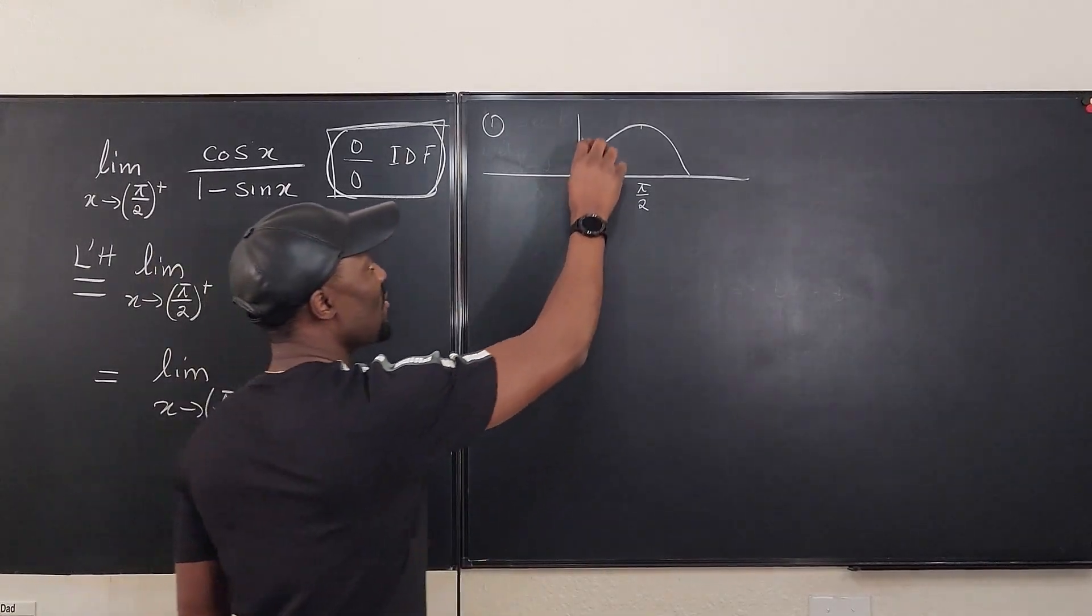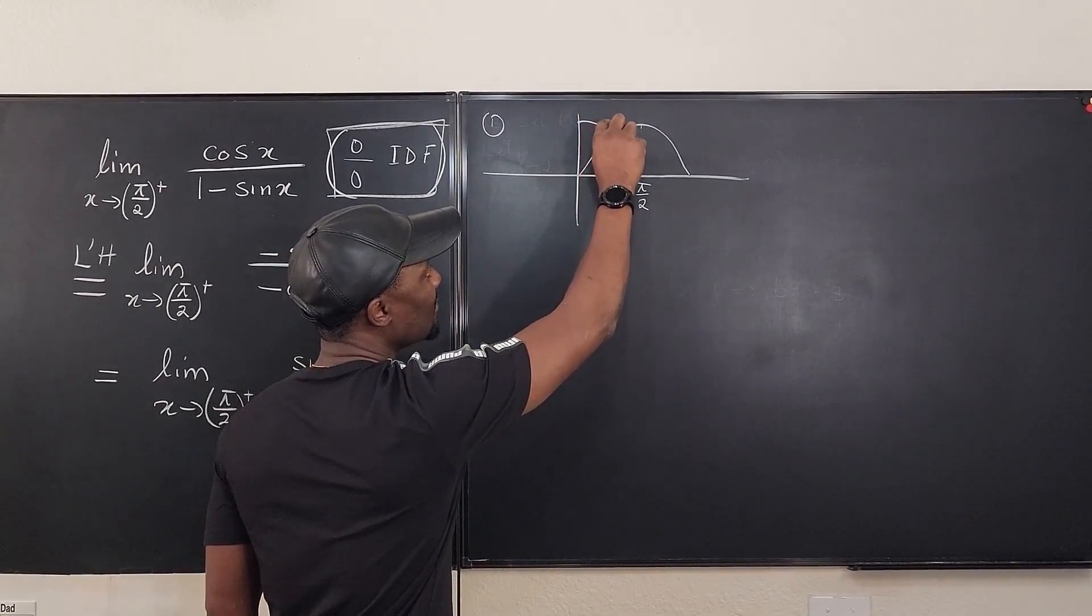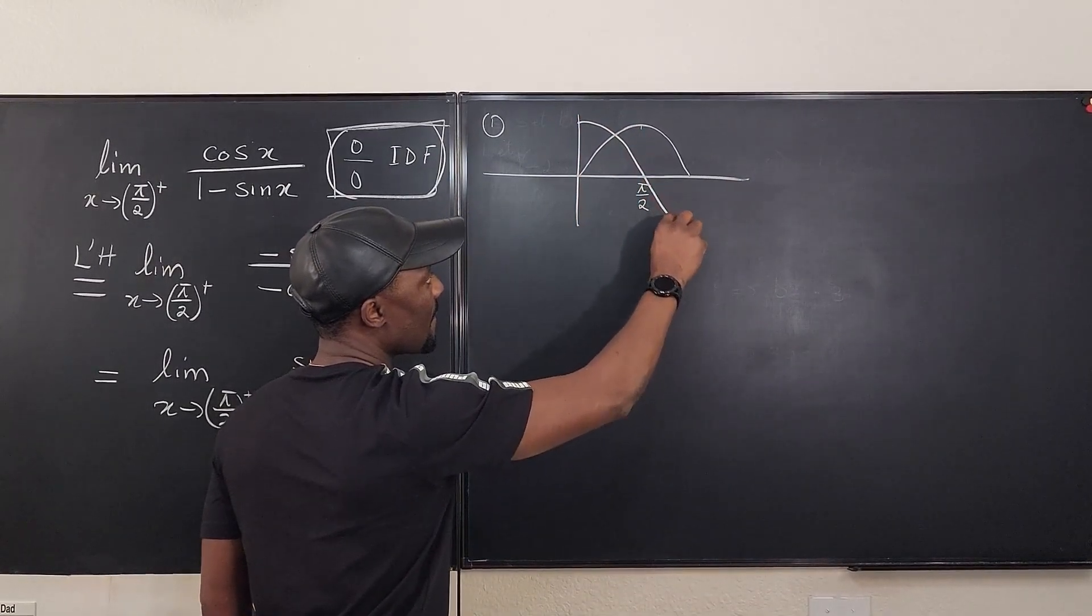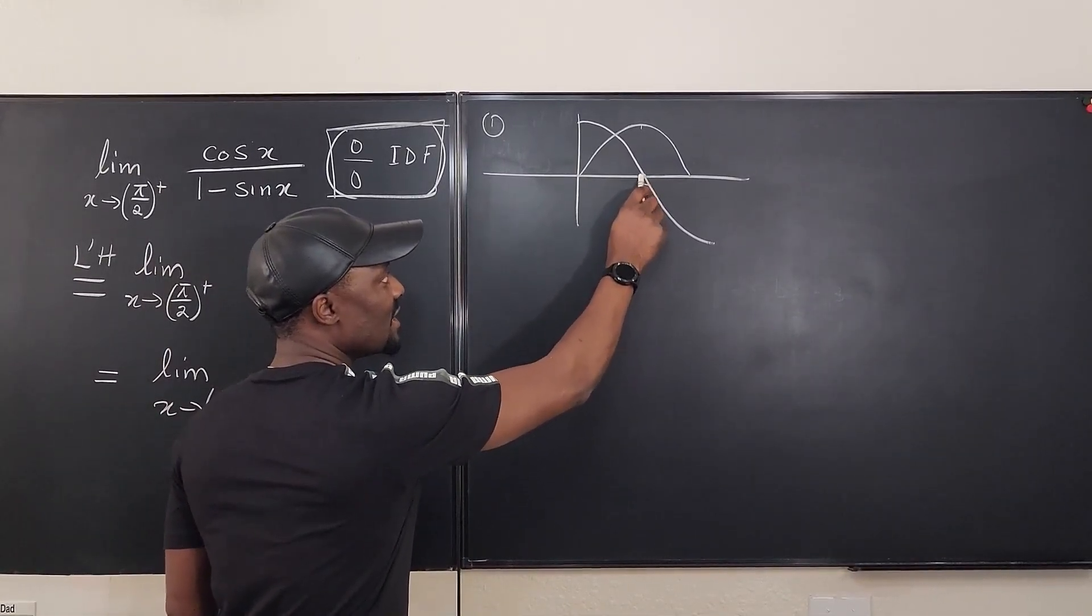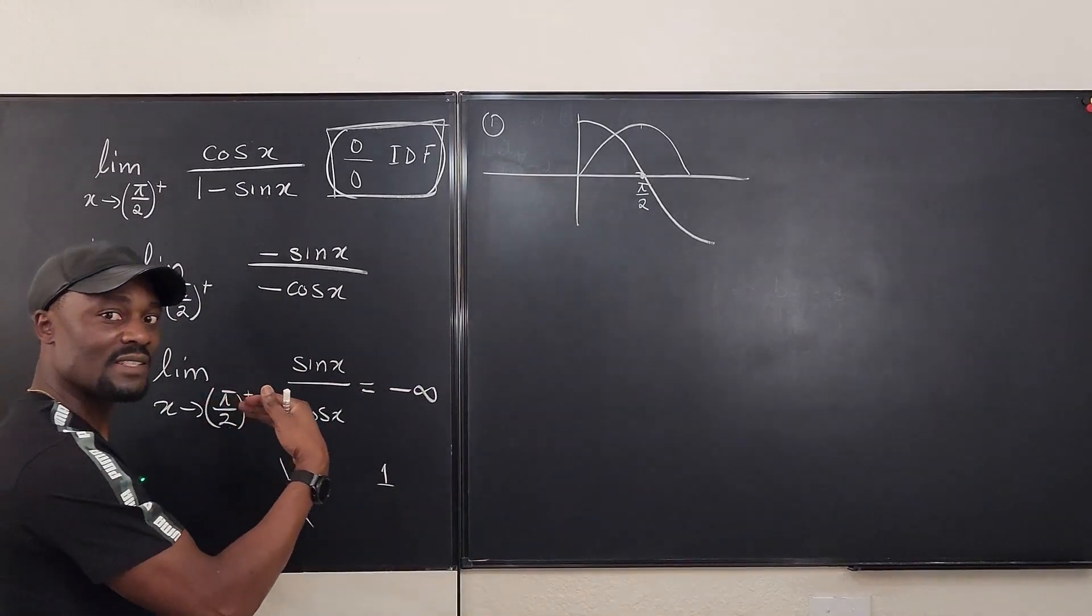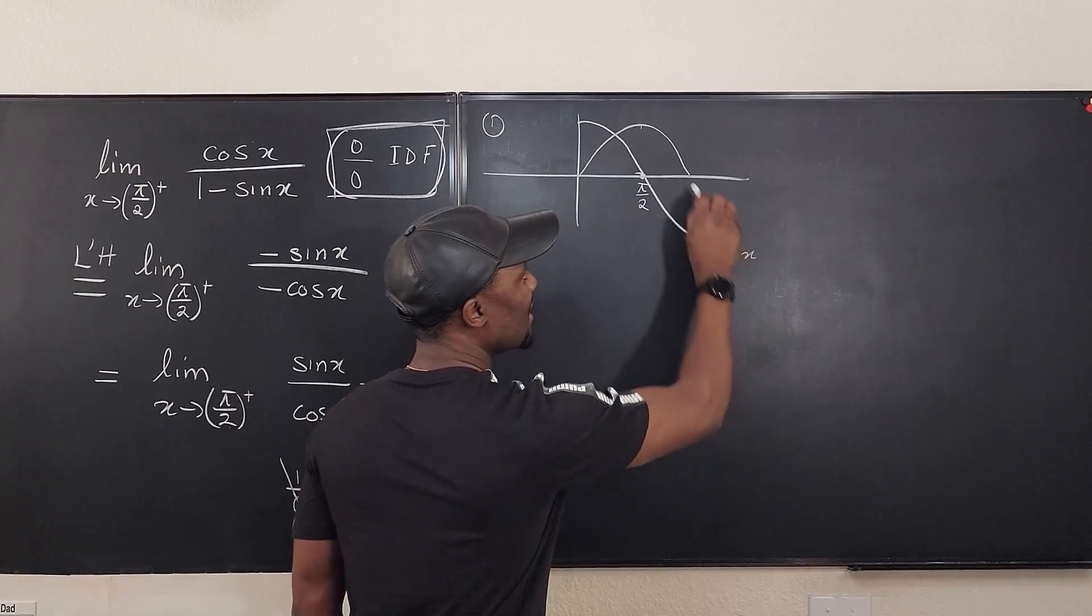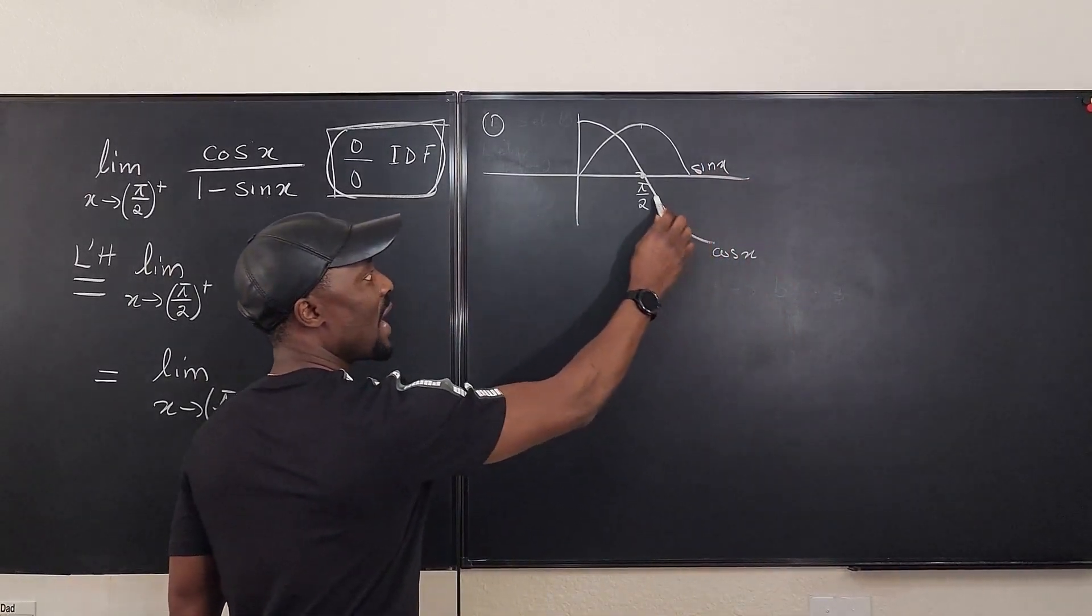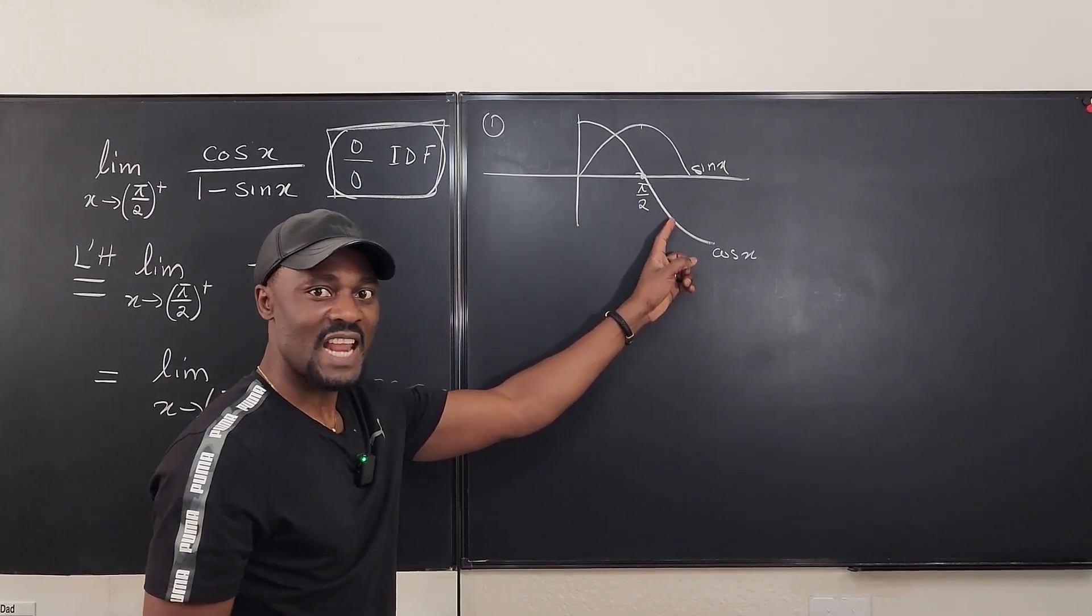If we sketch the graph of cosine x, it's going to be something like this. And this is where it is 0. But remember, we're approaching from the right. So, as cosine, this is cosine x, this is sine x. As cosine is approaching pi over 2 from the right, every value here is negative.